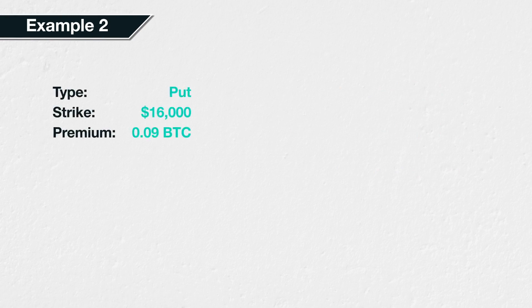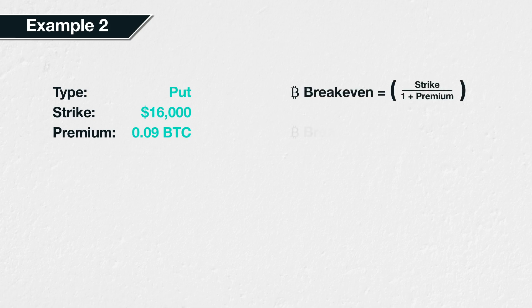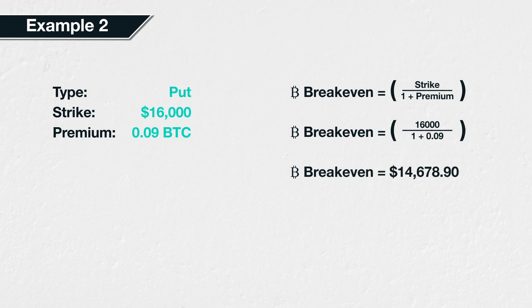Example 2. Suppose we purchase a bitcoin put option with a strike price of $16,000 and we pay a premium of 0.09 BTC for it. The break-even is calculated as strike price divided by 1 plus the premium, which is 16,000 divided by 1 plus 0.09, and this gives us a break-even of $14,678.90. As we are long this put option, any bitcoin price above this will result in a loss and any bitcoin price below this will result in a profit.